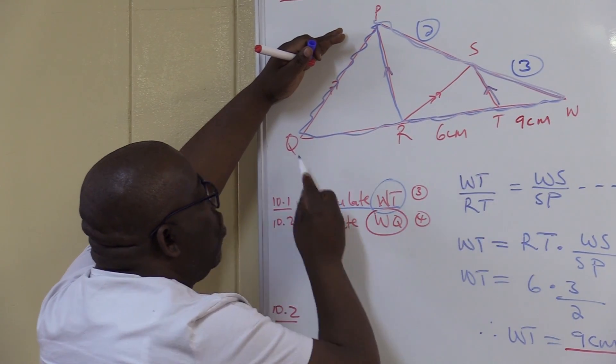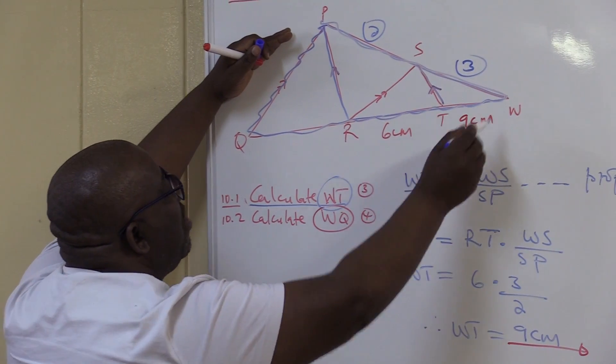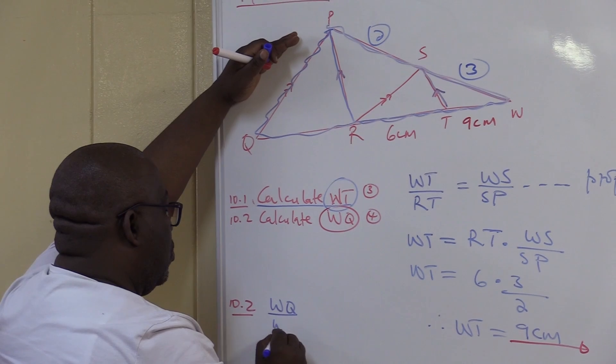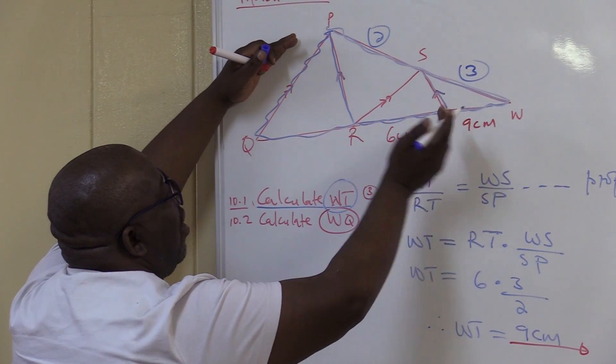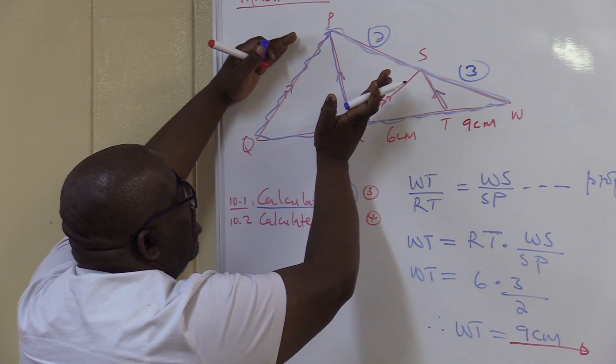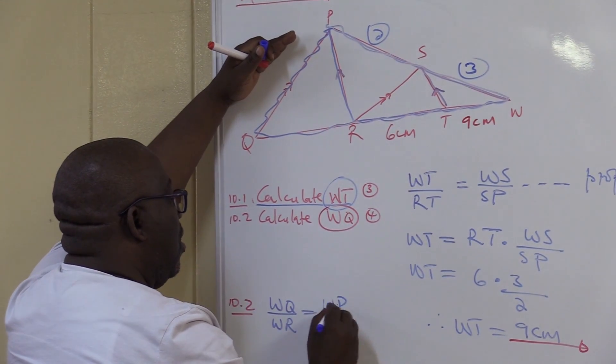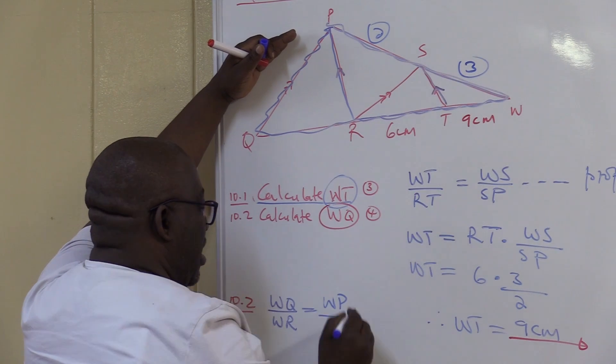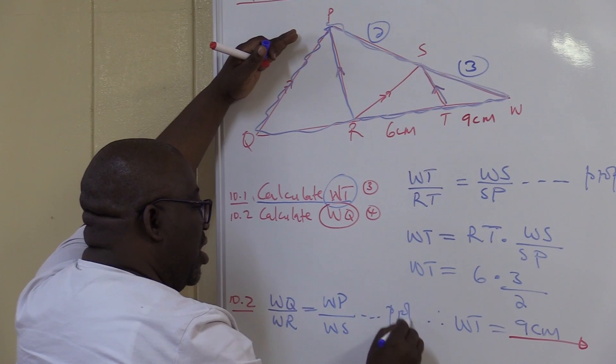We know that in this triangle, I've got to indicate that I'm using the bigger triangle. Then WQ over WR is equal to... WQ over WR. Remember these are the parallel lines that I'm using. WP over WS. What did I use here? I used proportionality theorem. What is it that I'm looking for? I'm looking for WQ.